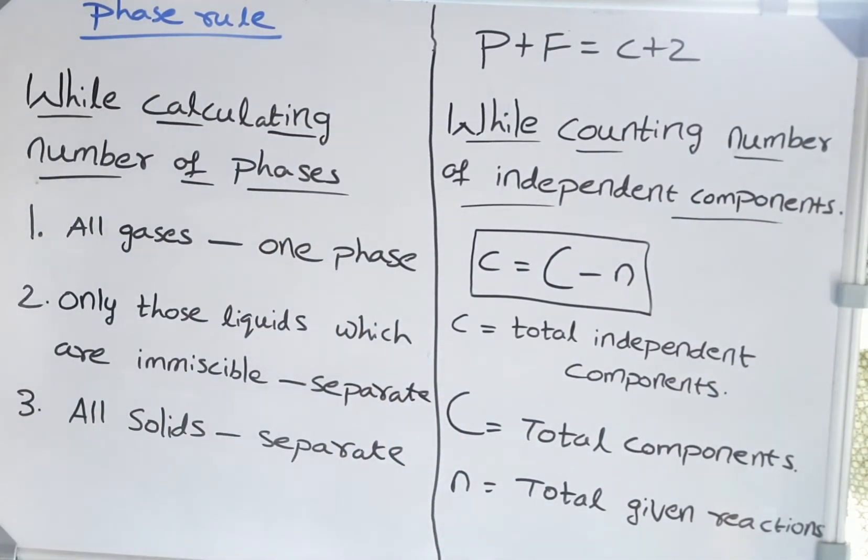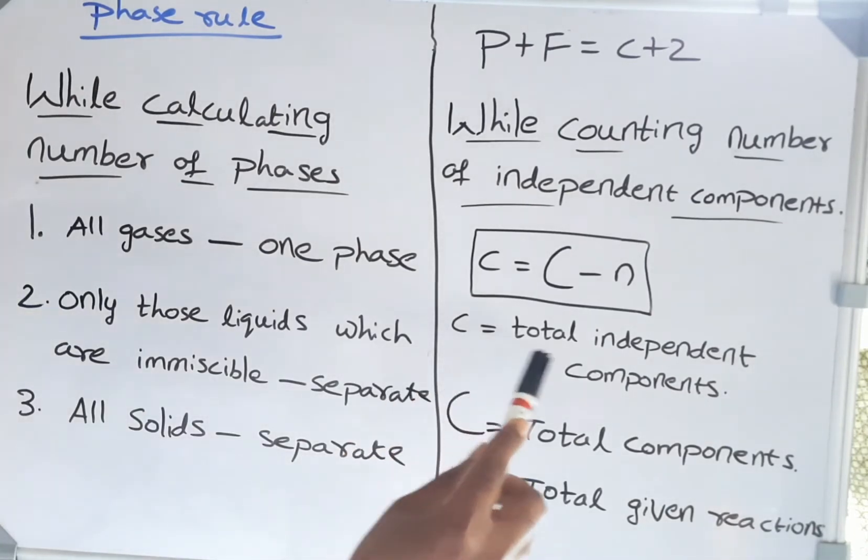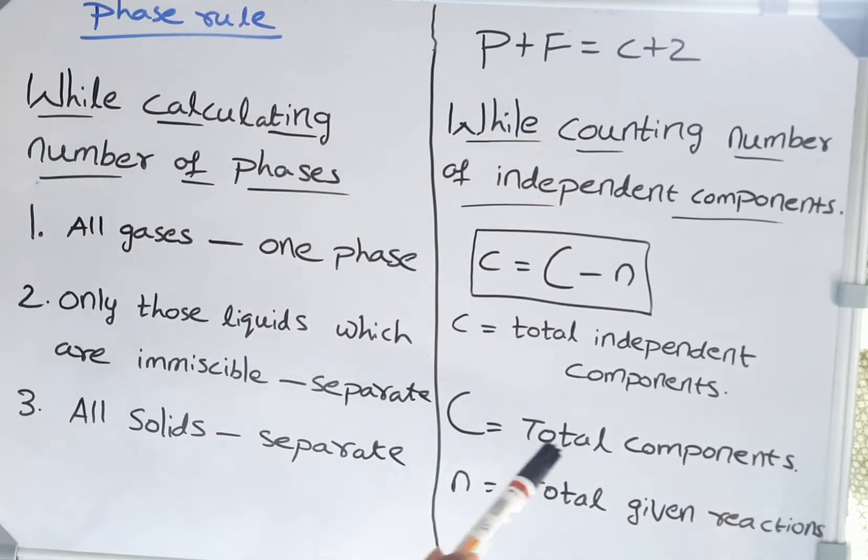If a series of n reactions are given, the total number of independent components becomes total components minus n. Here, small c is total independent components, capital C is total components, and n is the total given reactions. Take a screenshot of this, it might help you later. Now I'll explain why we need to subtract n.